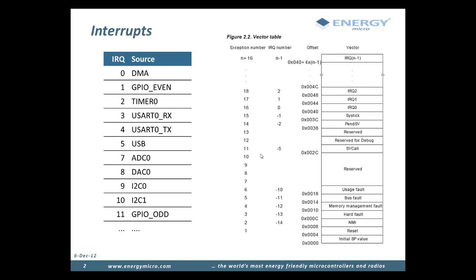On the Cortex-M3 CPUs, interrupts are specified in an interrupt vector and handled by a dedicated unit called the Nested Vector Interrupt Controller, or for short, we're just going to refer to it as NVIC. The interrupt vector contains a list of all the available interrupts on the device. Each entry in the vector table is a pointer to the corresponding interrupt handler. On the right-hand side of this slide, you can see a general interrupt vector on an EFM32.